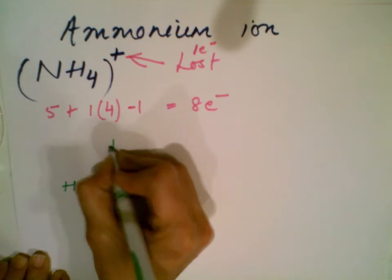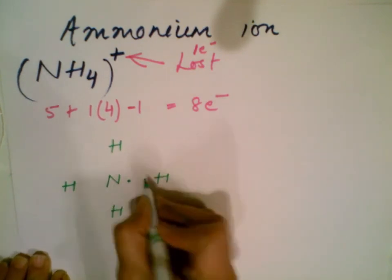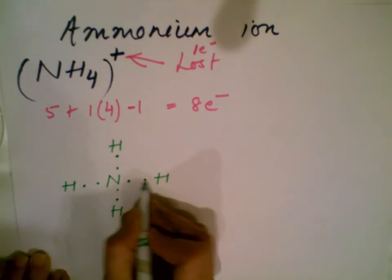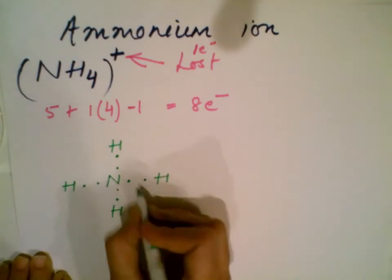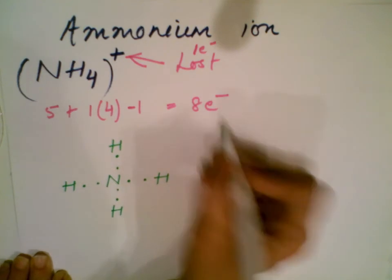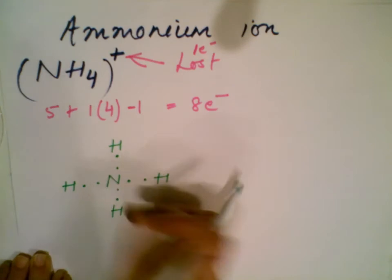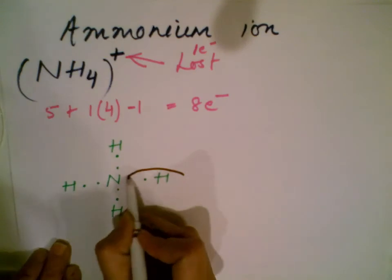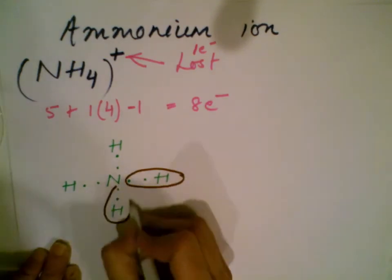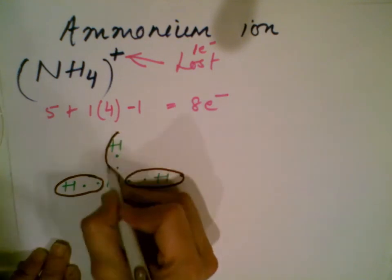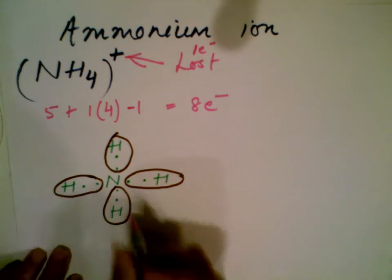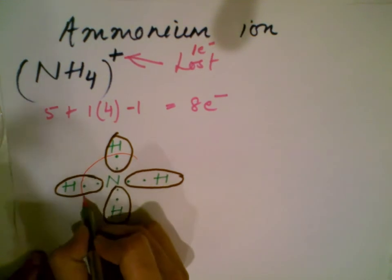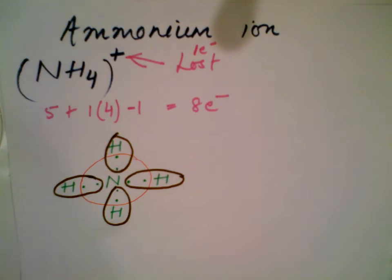We have nitrogen and four atoms of hydrogen. We put two dots in the middle between two atoms to ensure there is at least a single bond between them. When you total up, all eight electrons are used — one, two, three, four, five, six, seven, eight. Hydrogen is satisfied because it just needs one more electron to be like helium, the nearest noble gas. Nitrogen also has eight electrons, so its octet is complete.